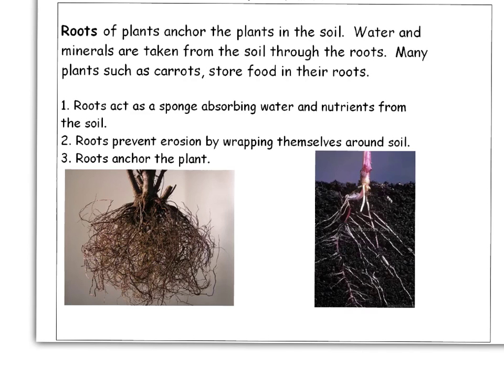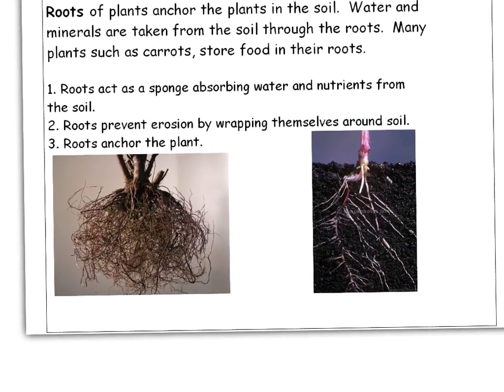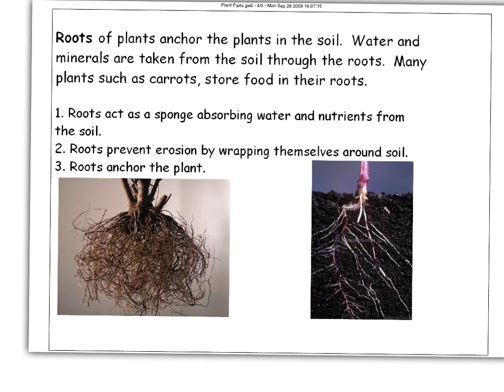Number two is that roots prevent erosion. Erosion is the movement of weathered rock from one area to another. So whenever rain washes away dirt and it goes from the top of a hill to the bottom, that's erosion. But as you can see here, the roots tie all of the dirt together. If it packs it together, there's less chance that it will fall apart. And three, roots anchor the plant — as you can see in the pictures, once they're stuck into the ground, it's what keeps the plant from falling over.